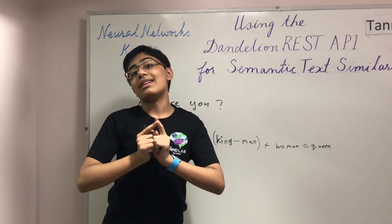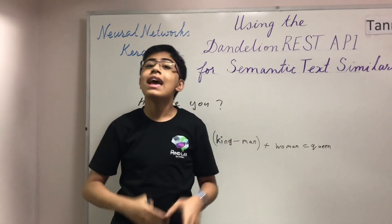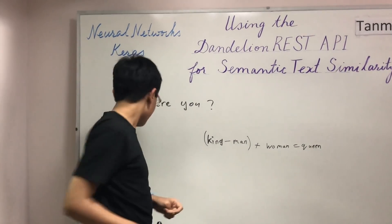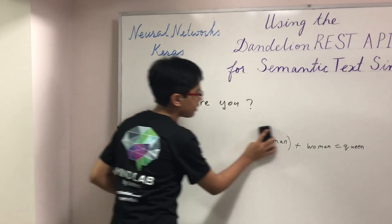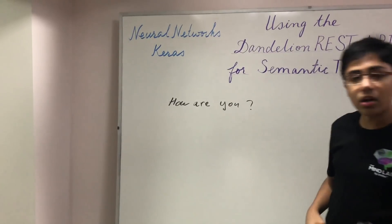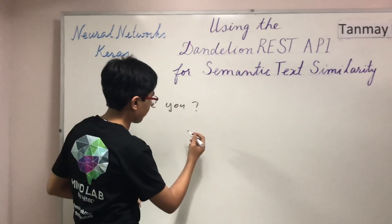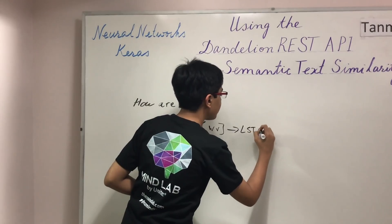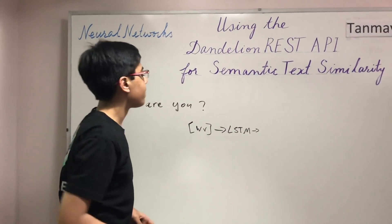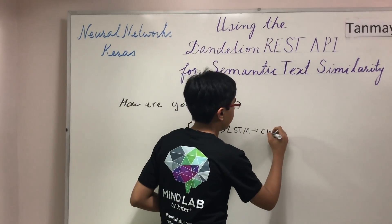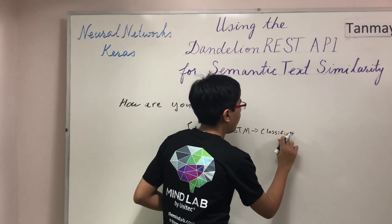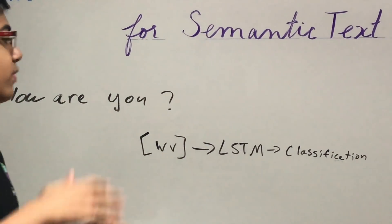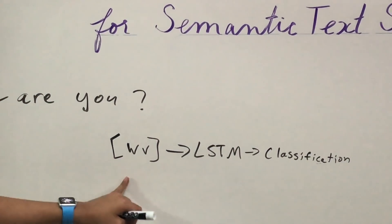But what word vectors don't capture is what a sentence or paragraph means — they just give you a bunch of individual vectors. The way you find out what these vectors in conjunction mean is by using a neural network. We'll have an array of word vectors going into an LSTM network, which gives us a classification. There are also dense layers, dropout, and other layers involved, but at a high level it's: word vectors → LSTM → classification.